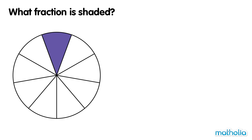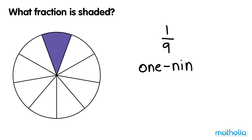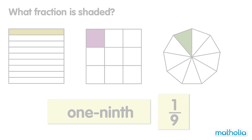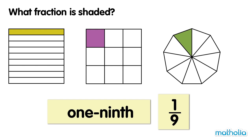This circle is divided into 9 equal parts. One part is shaded. One ninth of the circle is shaded. One ninth. One ninth of these shapes are shaded.